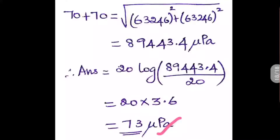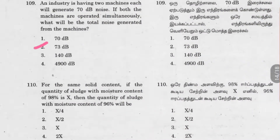There is a short trick here: whenever the same noise level is added with itself, the combined effect is simply the original value plus 3. So 70 plus 70 gives 73, and similarly 50 plus 50 would give 53. If you know this rule, you can directly select 73 decibels without calculation. Option 2 is the right answer.